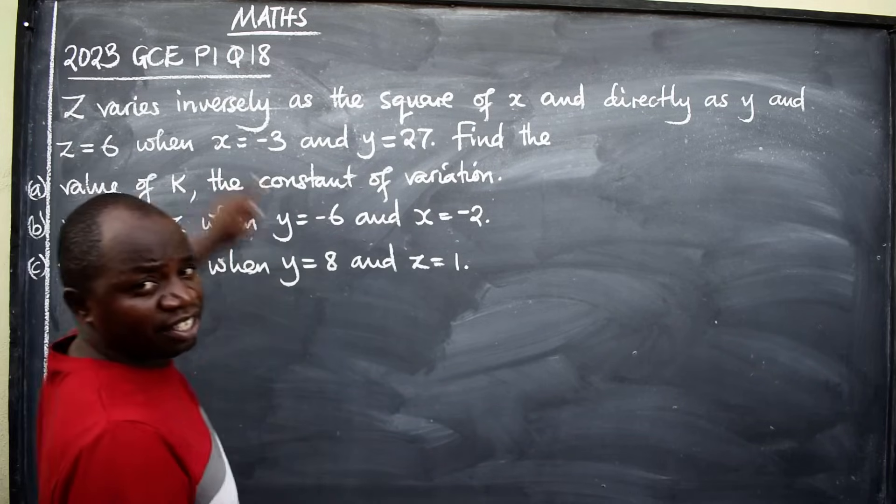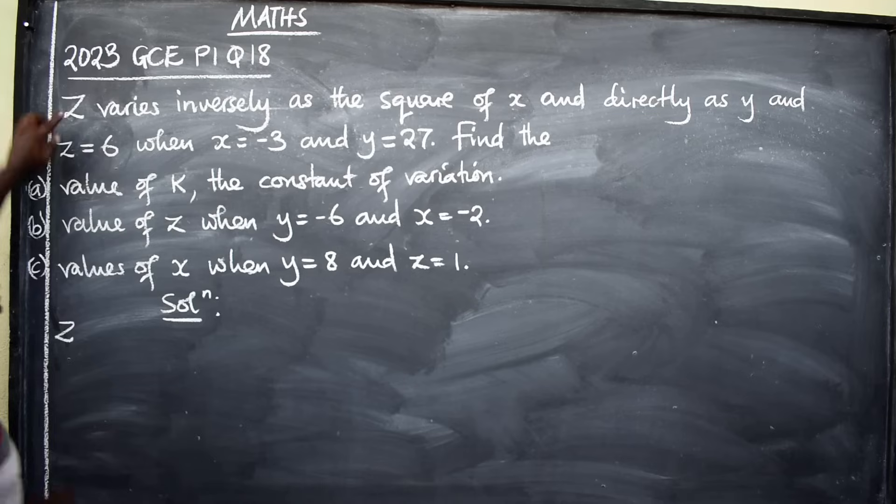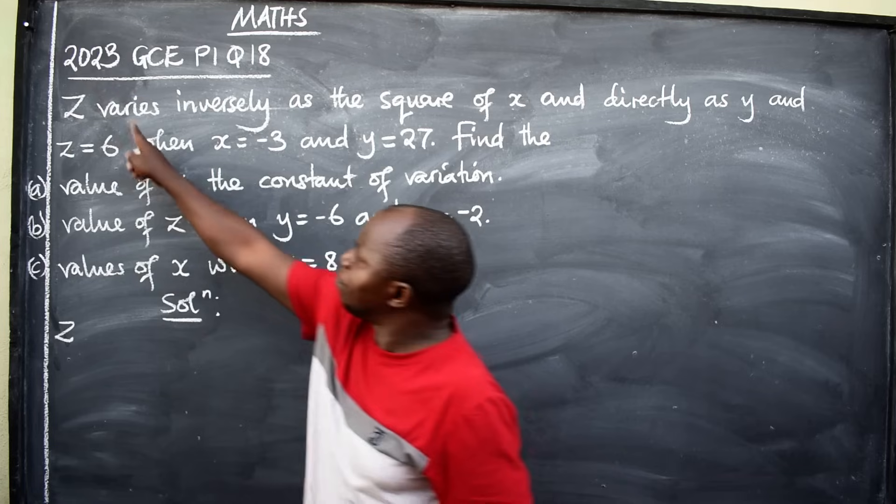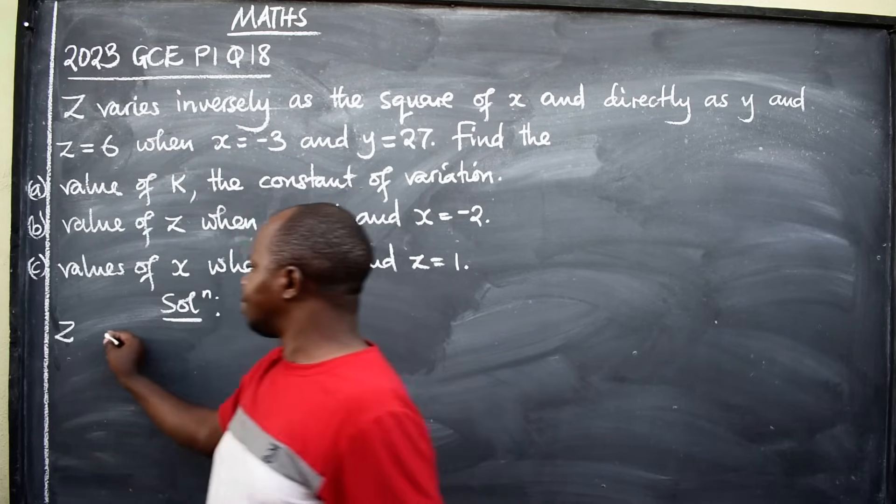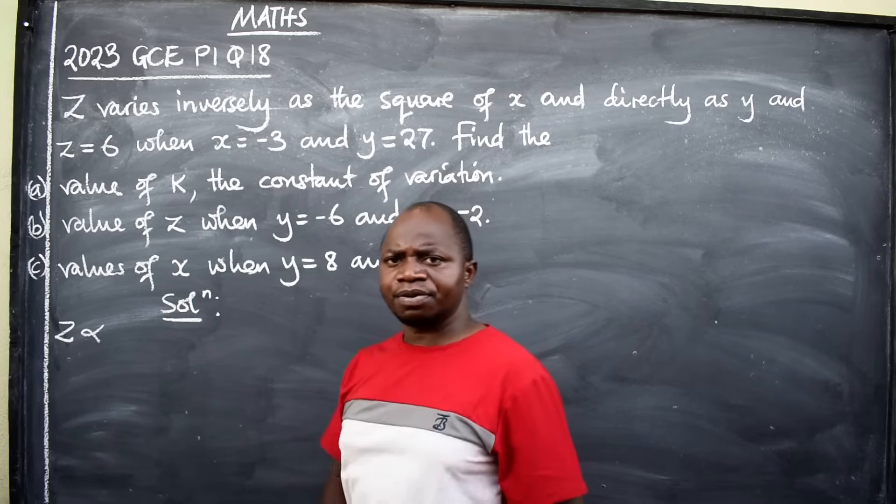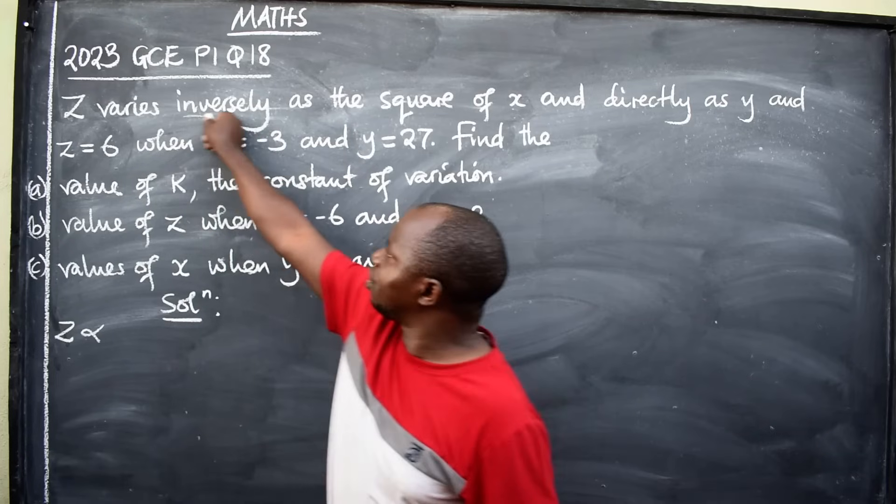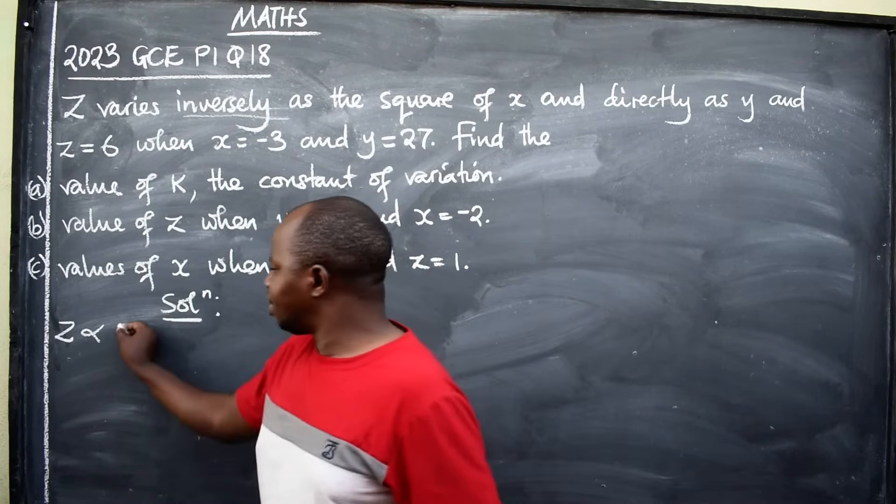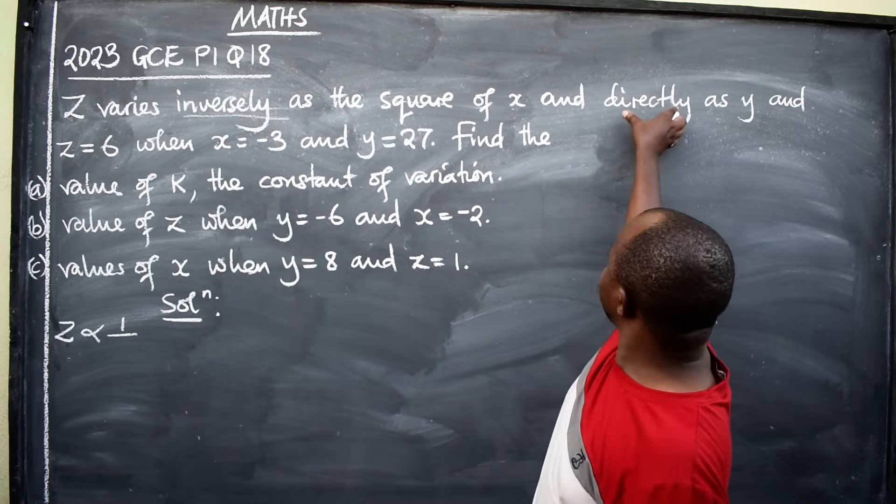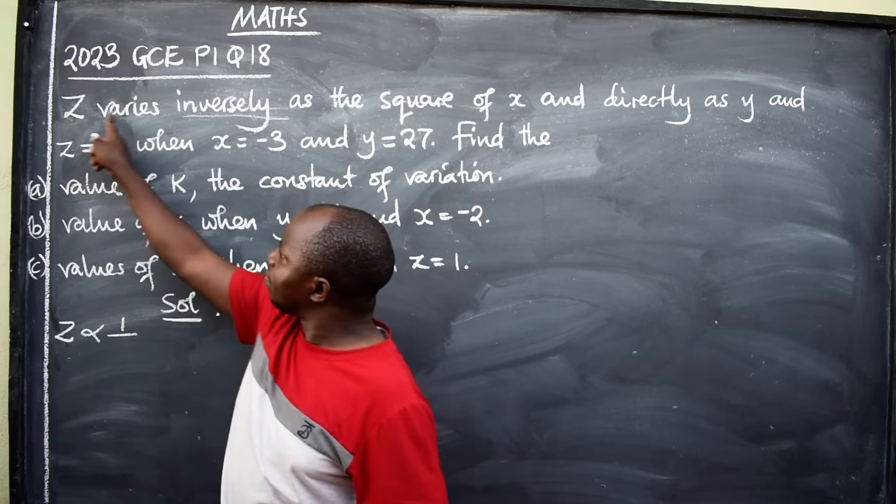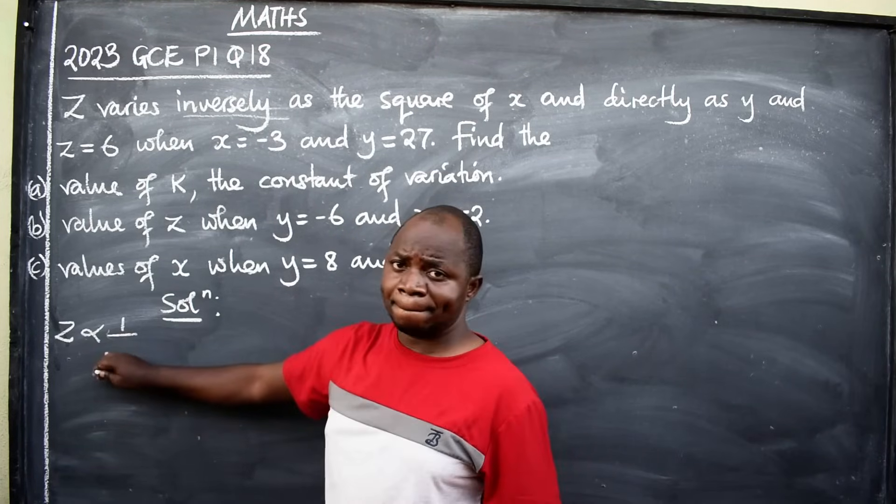Let's start. Z. Write Z. That's the first thing. We are following. Varies. You change this word varies, or when they say varies, proportion, you change this word to this symbol. Z varies inversely. Inversely means one over. That is z, inversely. If it was z varies directly, you could have just written without one over. Because inverse means down here.